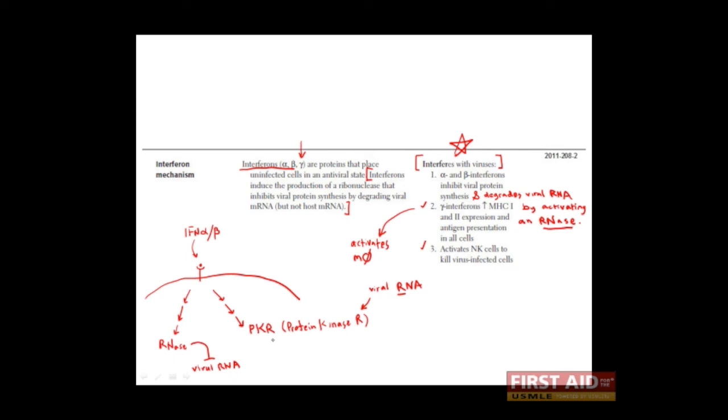When protein kinase R is activated, it phosphorylates eukaryotic initiation factor 2-alpha, which is needed to initiate translation.